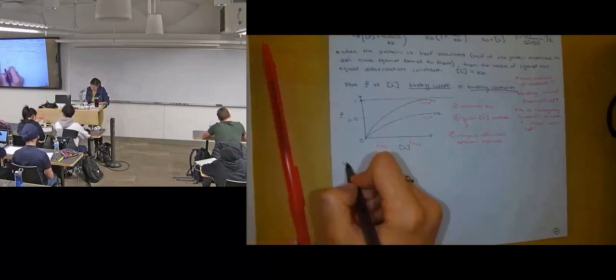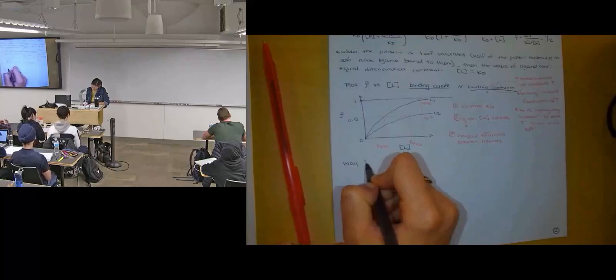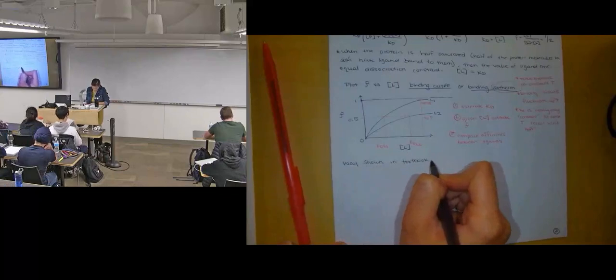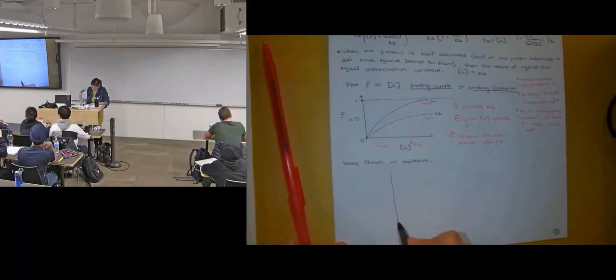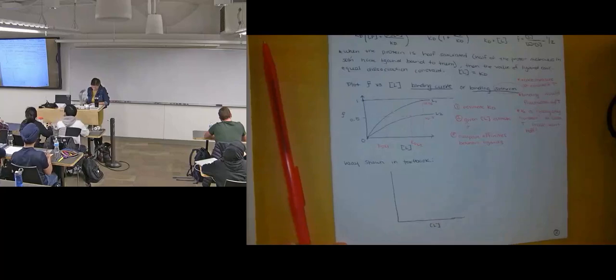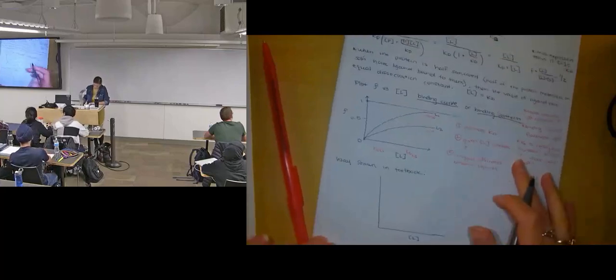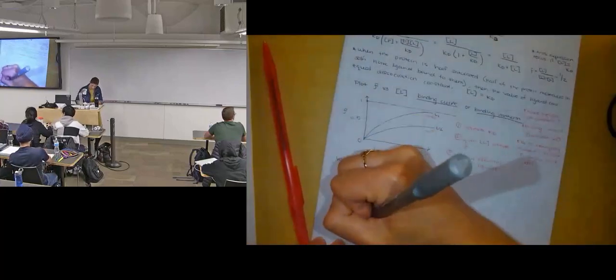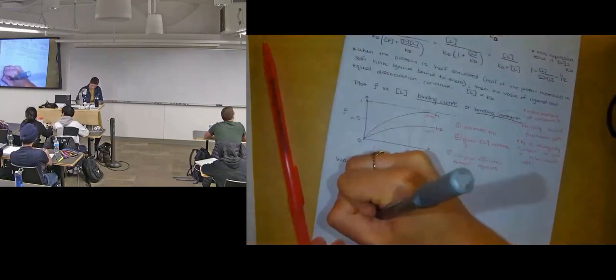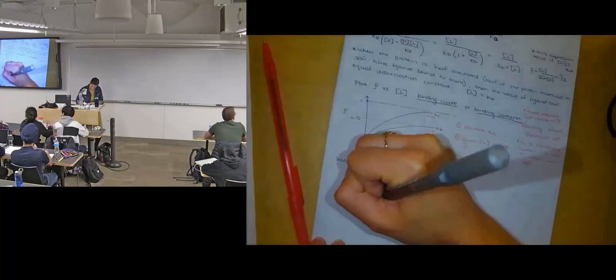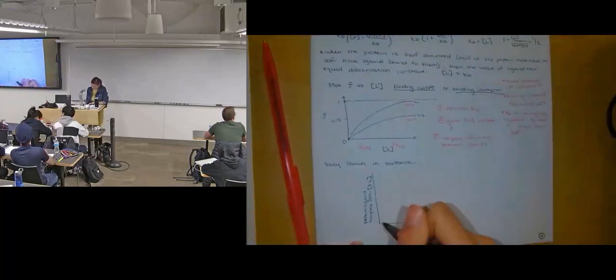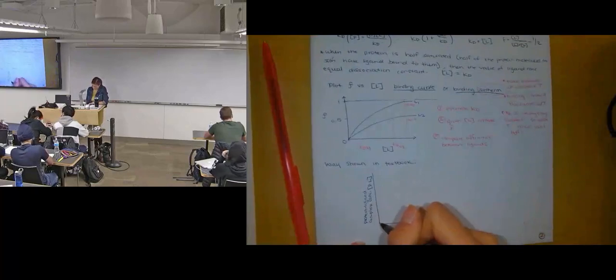The way it's shown in the textbook looks like this. It still has your ligand concentration on the x-axis, but on your y-axis is the protein-ligand complex concentration. And so the curve still looks hyperbolic.